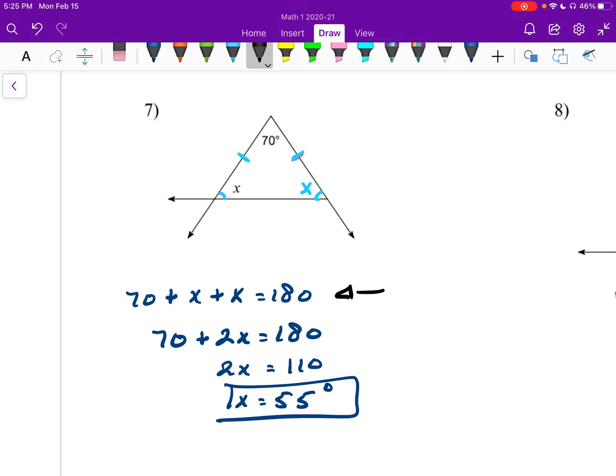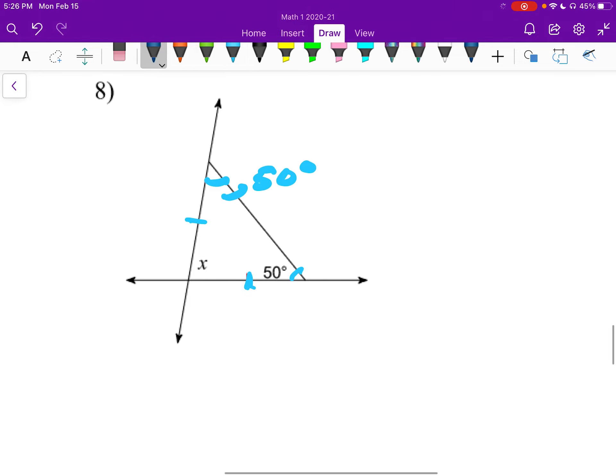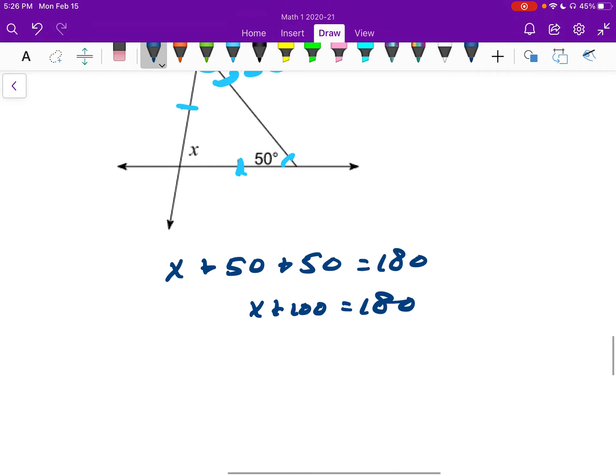Number eight. Here and here are my isosceles sides. So that makes this angle and that angle equal. And now I can add them up and set them equal to 180. So x plus 50 plus 50 is 180. So x plus 100 is 180. Subtracting my 100, I get x is 80 degrees.